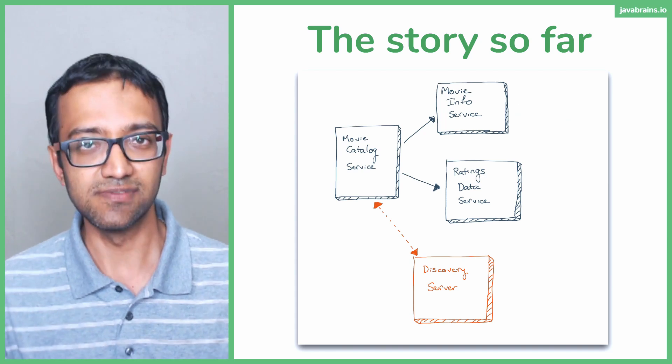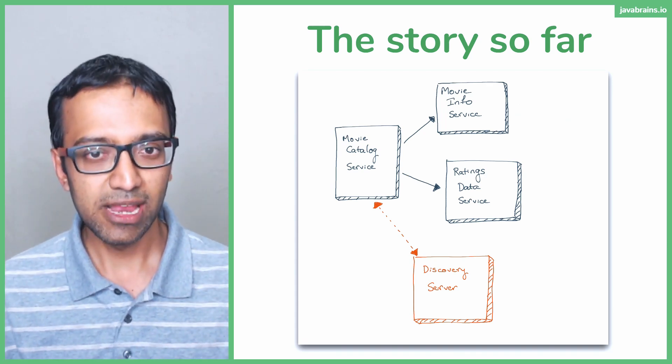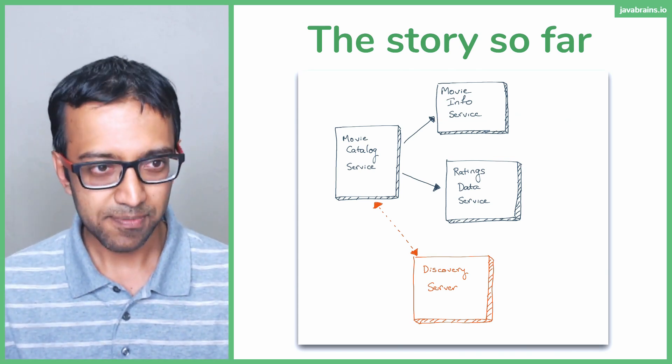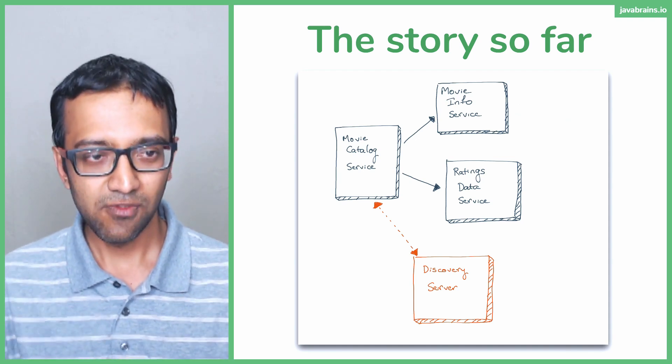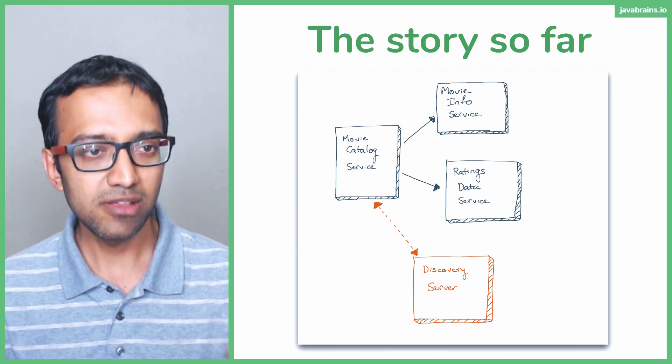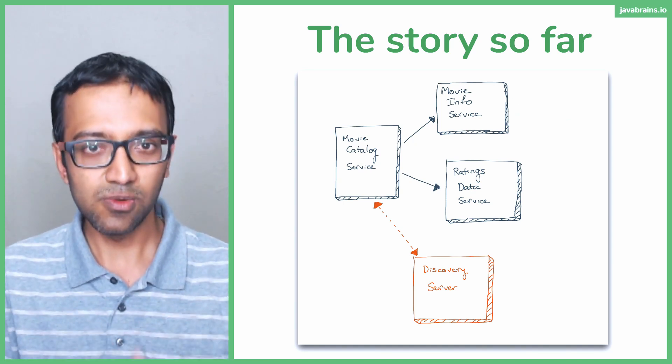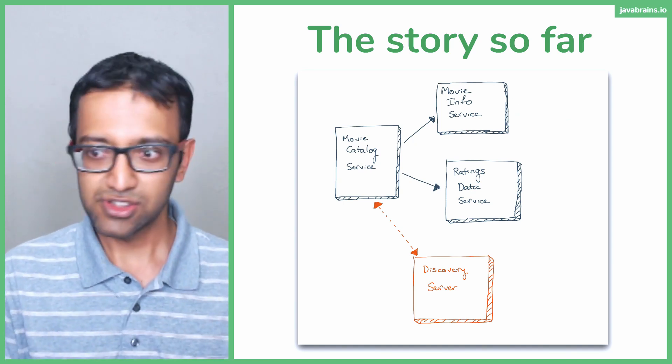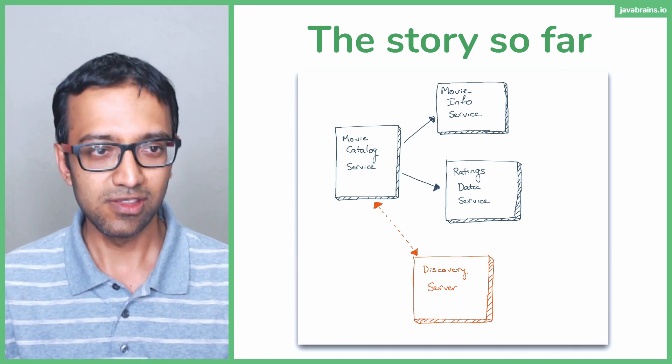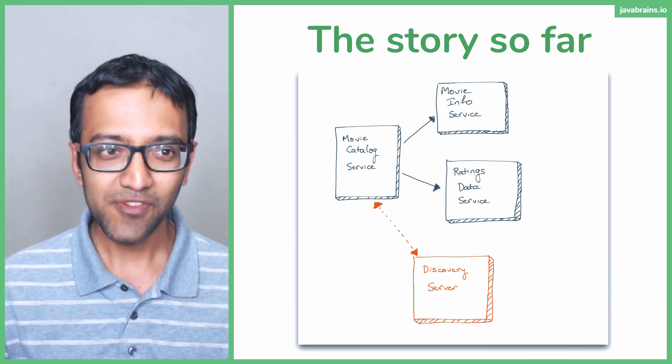And then the movie catalog service was like the main service, kind of like the entry point for somebody who's calling it. The movie catalog service would call the ratings data service and say get me all the movies that this guy has rated. It would get back the movie ID and the rating. And then for each movie ID there, it would call the movie info service and say get me the information about this movie. So if you had rated two movies, we'll get those two movie information, kind of bundle them together into one response, then send it back. So the user would see the movie ID, the movie name, the movie description and what the user is rated, kind of like a consolidated response.